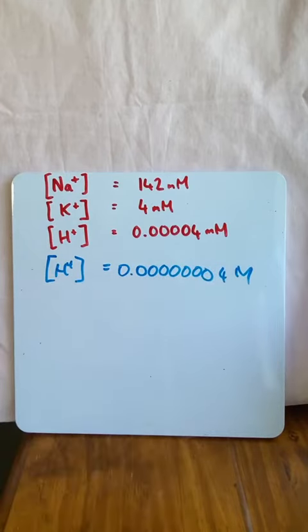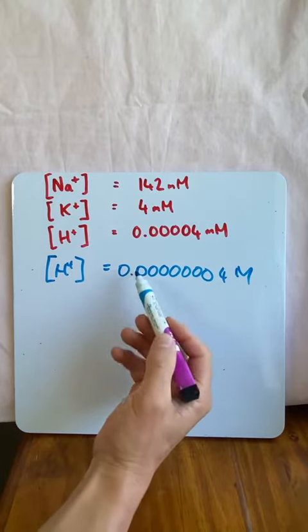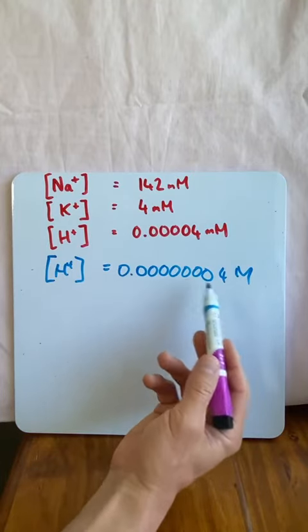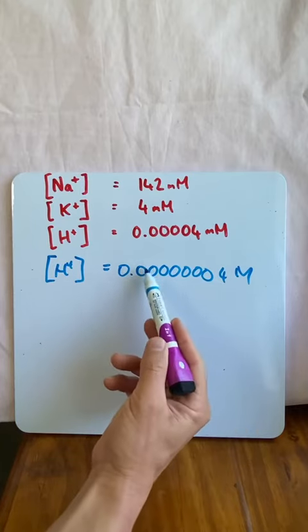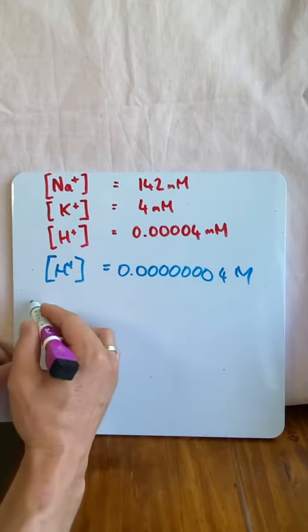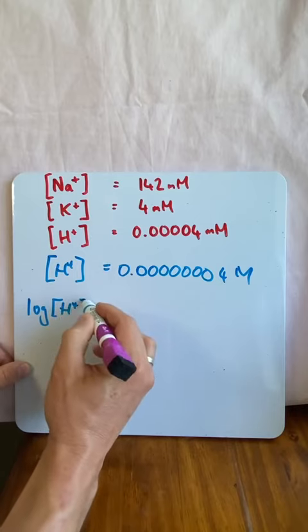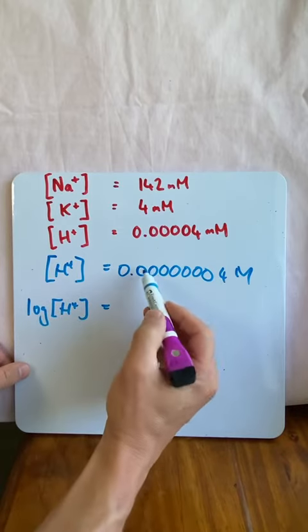Now again, too many zeros. We can't have this, so what do we do? Well if we want to get rid of these zeros, we can take the log. Now the log will get rid of all these decimal places. So if we were to do the log of hydrogen ion concentration, what we end up getting is it moves